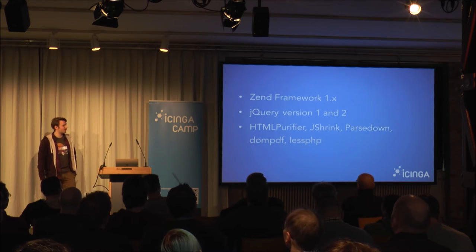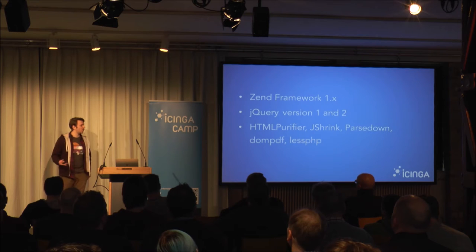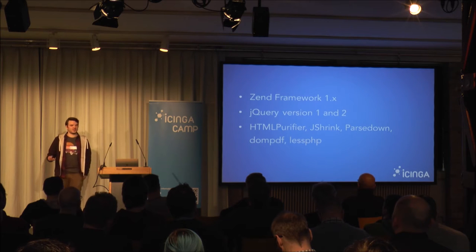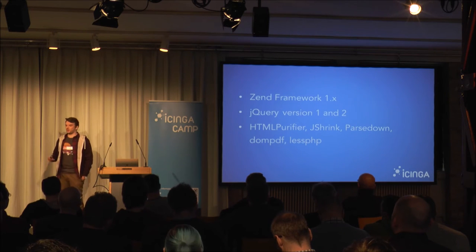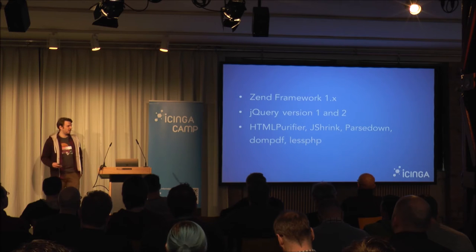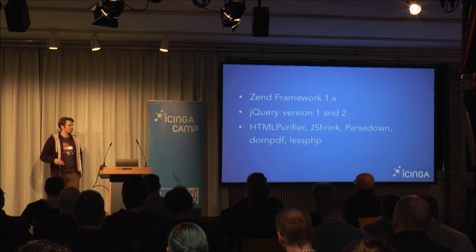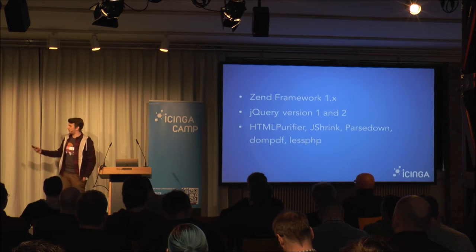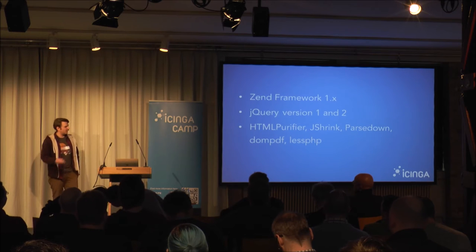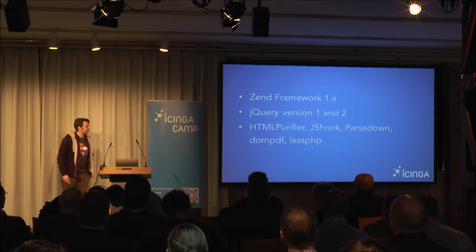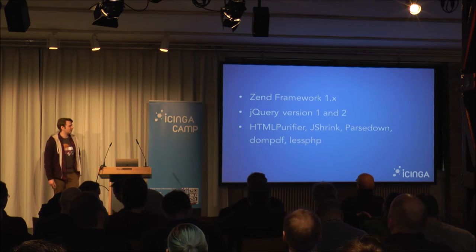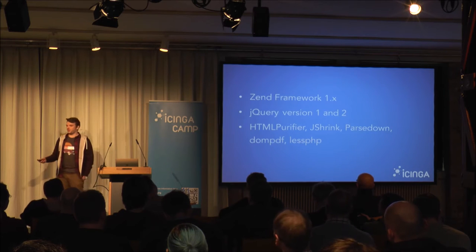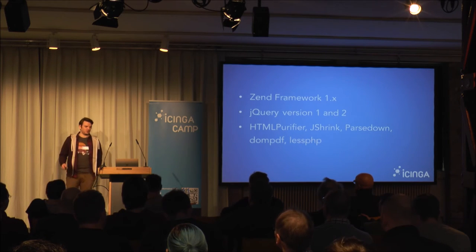The libraries shipped with Icinga Web 2 are Zend Framework 1 — or our fork of it. For JavaScript we have jQuery version 1 and 2, because Icinga Web 2 supports Internet Explorer starting from version 8 and jQuery 2 is not compatible with that. So we ship jQuery 1 for IE and jQuery 2 for all the other browsers. We also have small other libraries, for example for parsing Markdown to HTML, dompdf for rendering PDF, and less.php for translating LESS to CSS.